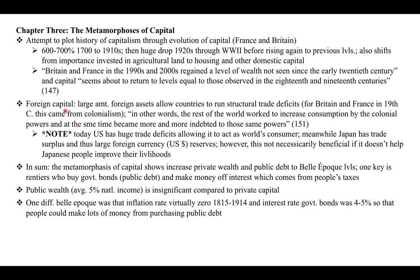Regarding foreign capital: a large amount of foreign assets would allow countries to run structural trade deficits. For Britain and France in the 19th century, this came from having a lot of colonies — they owned a lot of capital in other countries. As he says, the rest of the world worked to increase consumption by the colonial powers, and at the same time became more and more indebted to those same powers. The harder they worked producing for colonial powers, none of that profit was returned to them.